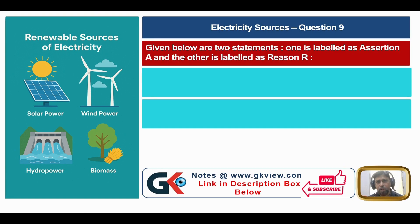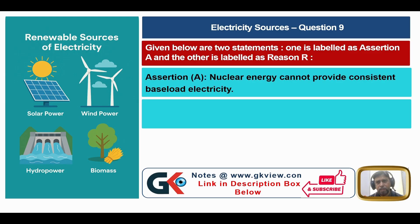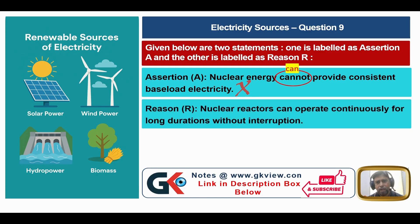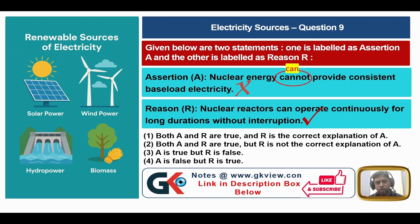Question number nine: assertion A states that nuclear energy cannot provide consistent baseload electricity — 'cannot' is wrong; it should be 'can.' So assertion A is false. Reason R states that nuclear reactors can operate continuously for long durations without interruption — this is true. Since A is false but R is true, the answer is 4.